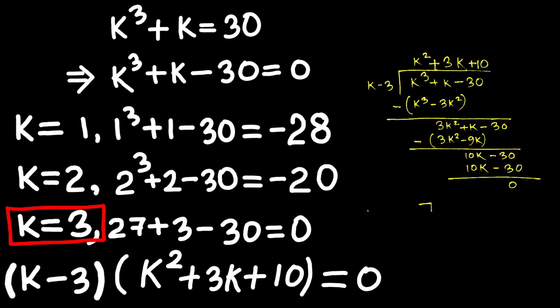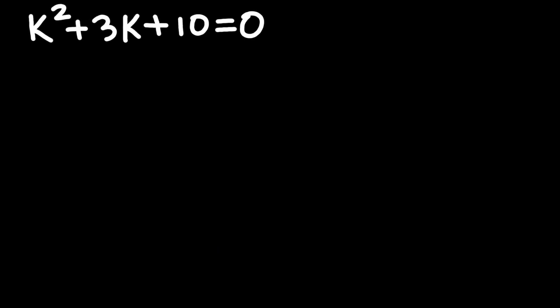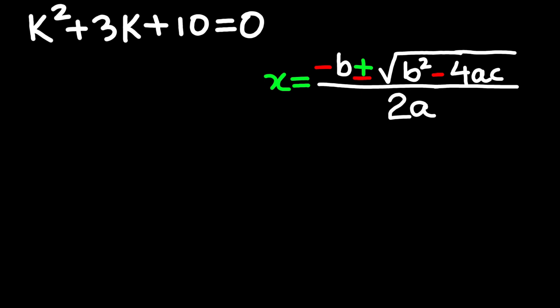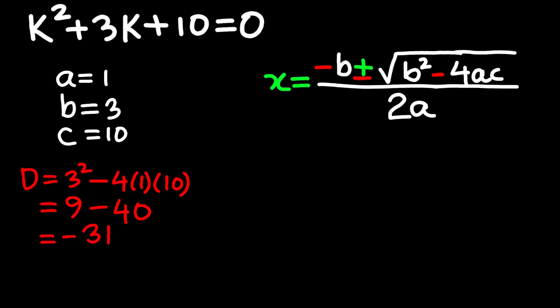We already neutralized the first threat. Now it's time to face the mini-boss, that quadratic. Now quadratic formula time. You know the drill, negative b plus or minus the square root of b squared minus 4ac all over 2a. Here, a equals 1, b equals 3, c equals 10. Let's run it. 3 squared is 9, subtract 40, and we get negative 31.